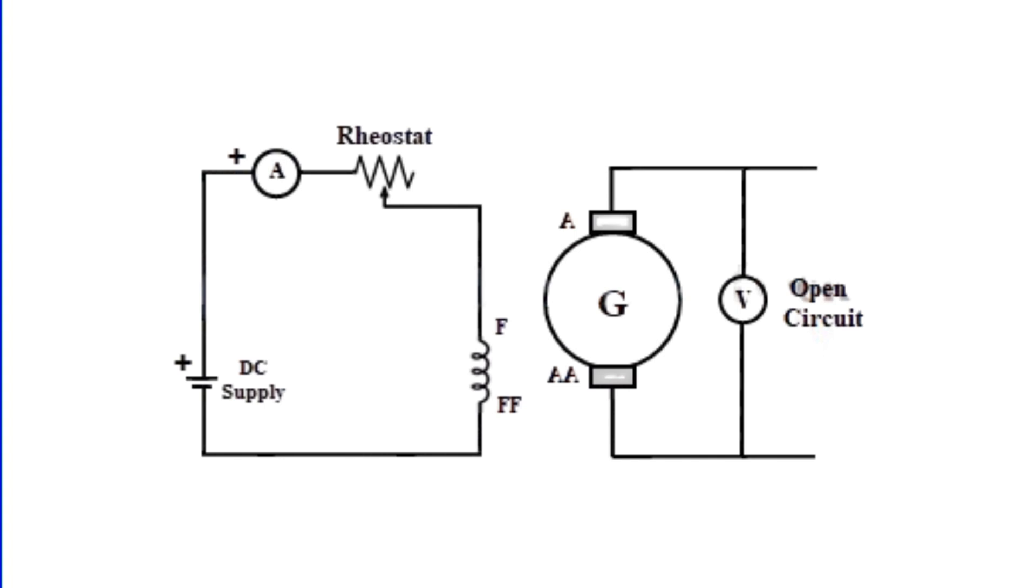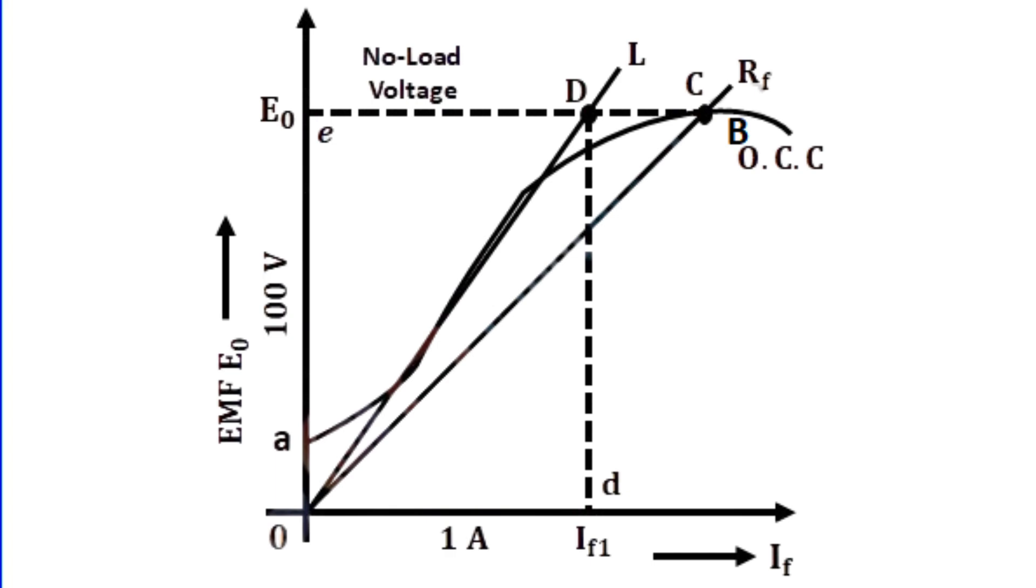The DC shunt generator is operated at rated speed by decreasing the field resistance in steps from zero to a definite value. The readings of the ammeter and voltmeter are noted at each step. The field resistance is increased until the voltmeter shows a reading of 25% more than the rated voltage. Here it is noted that even with the increase in field current by decreasing field resistance, the EMF generated after point B is reduced. It is because of saturation.